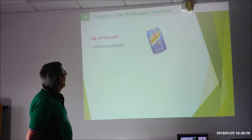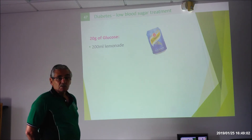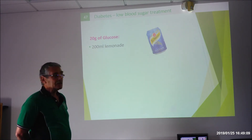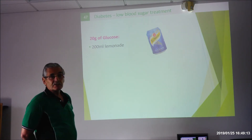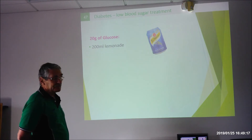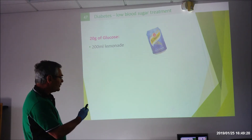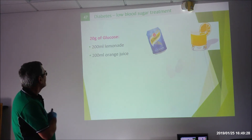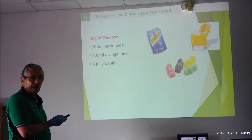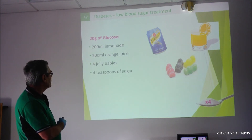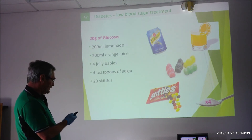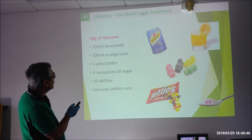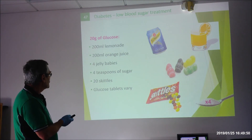They recommend 200 mils of lemonade, but it must be the original, not the diet. With companies being affected by the sugar tax, you may need to give 250 mils as they've reduced the sugar content. Alternatives to 200 mils of lemonade or orange juice include: four jelly babies, four teaspoons of sugar, 20 skittles, or glucose tablets — all of these roughly contain 20 grams of glucose.